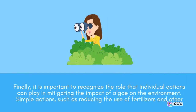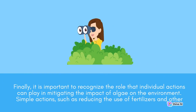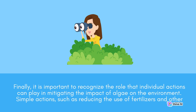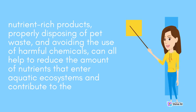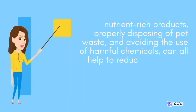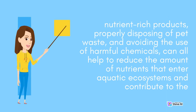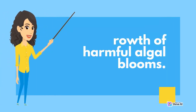It is important to recognize the role that individual actions can play in mitigating the impact of algae on the environment. Simple actions, such as reducing the use of fertilizers and other nutrient-rich products, properly disposing of pet waste, and avoiding the use of harmful chemicals, can all help to reduce the amount of nutrients that enter aquatic ecosystems and contribute to the growth of harmful algal blooms.